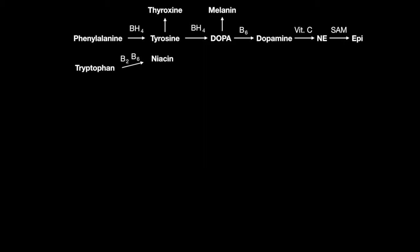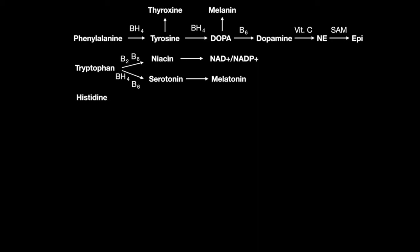The niacin can then go on to become NAD+ or NADP+. Tryptophan can also be used to make the neurotransmitter serotonin — this enzyme requires B6 and BH4. Serotonin may also be turned into melatonin. Histidine can become histamine, with vitamin B6. Glycine, with B6, can become porphyrin and then heme.